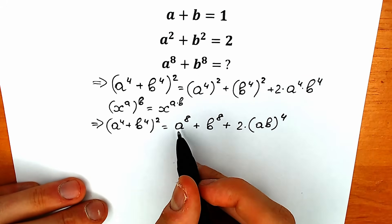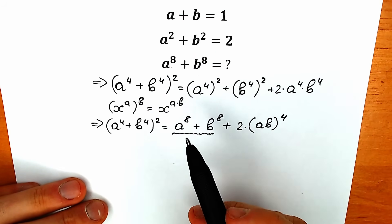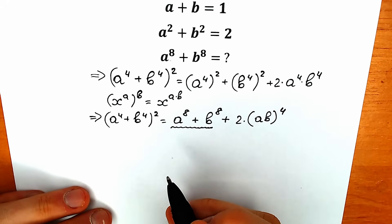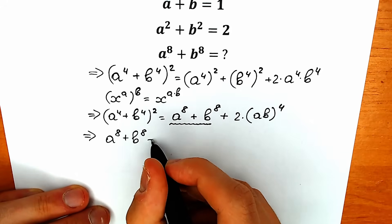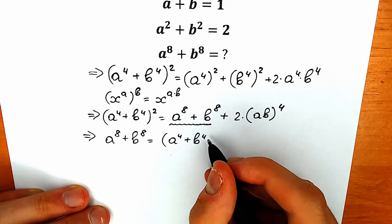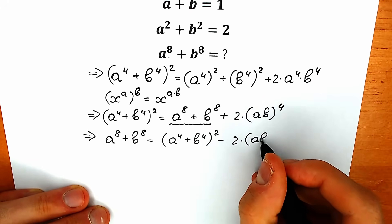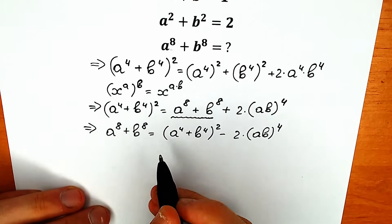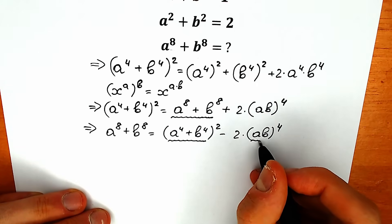Right here in the middle we have a to the eighth plus b to the eighth — the expression we need to find. So let's express a to the power 8 plus b to the power 8 from this whole expression: a to the 8th plus b to the 8th equals (a to the fourth plus b to the fourth) squared, minus 2 times (ab) to the fourth. We need to find a to the fourth plus b to the fourth, and also ab.